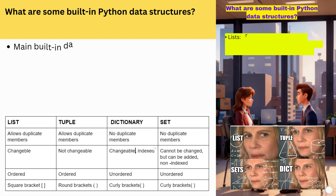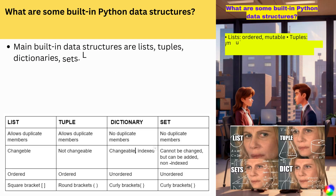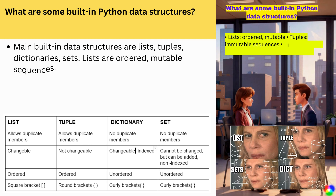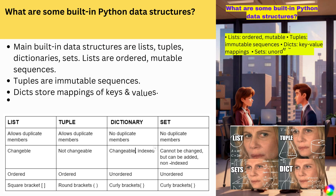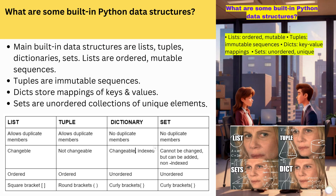What are some built-in Python data structures? The main built-in data structures are lists, tuples, dictionaries, and sets. Lists are ordered, mutable sequences. Tuples are immutable sequences. Dicts store mappings of keys and values. Sets are unordered collections of unique elements.